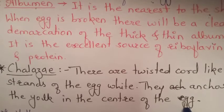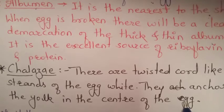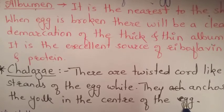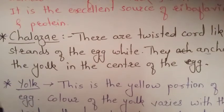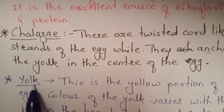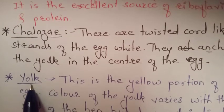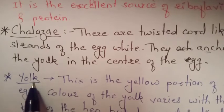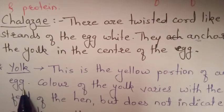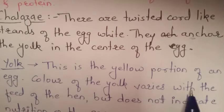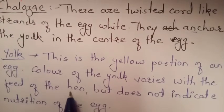The chalaza anchors the yolk in the center of the egg. When the egg is opened, the chalaza can be seen as the anchoring structure. The last part is the yolk — this is the yellow portion of an egg.